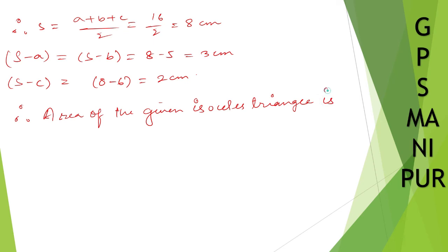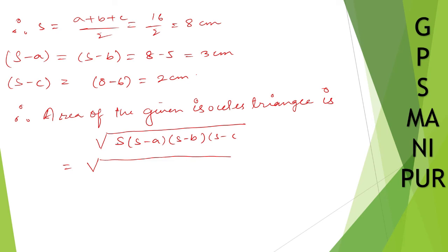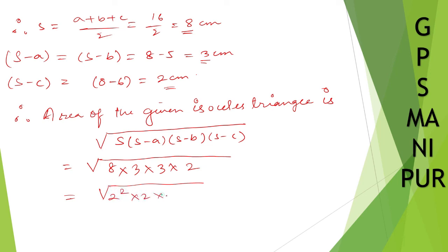The area of the given isosceles triangle is root over S into S minus A into S minus B into S minus C. Which equals root over 8 into 3 into 3 into 2. Now 8 can be written as 2 into 2 into 2, so we have 2 squared into 2, and 3 into 3. Taking one 2 out and one 3 out, we get 6 root 2 centimeter square.